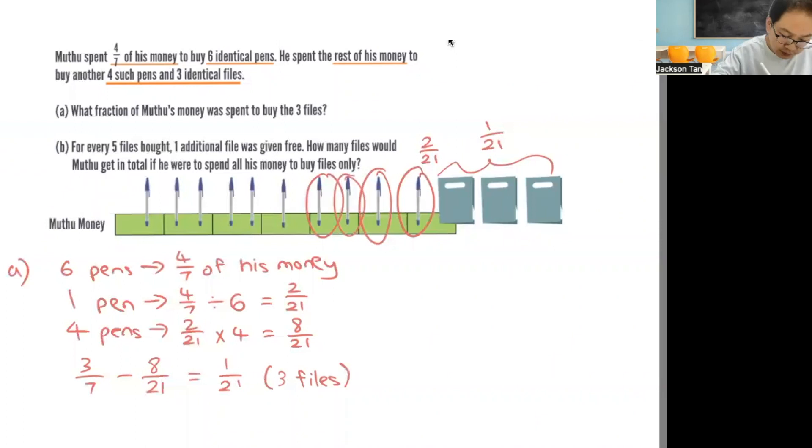Part B: Since you know one out of twenty-one of his money is three files, so all his money can buy sixty-three files.